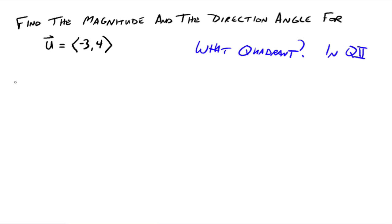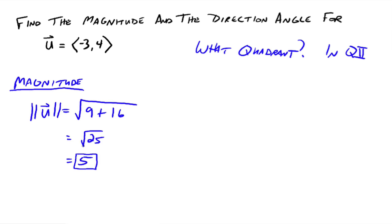So let's do magnitude first. Magnitude equals the square root of negative three squared, which is nine, plus four squared, which is 16, which is the square root of 25, which equals five. So the magnitude of this vector is five, you know, whatever units you're playing with.